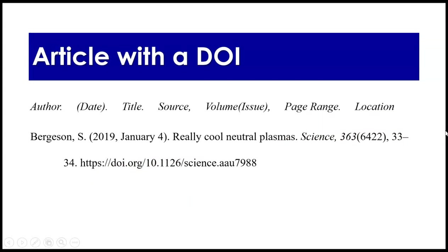For an article with a DOI, you have author, date, title, source, volume and issue, page range, and location. For volume and issue in journals, think of it like a TV show — if you're watching Fleabag, season one and two would be your volumes, and episodes inside those seasons would be your issues. So in this case, we have an article written by S. Bergeson, published 2019, January 4th. The title is 'Really Cool Neutral Plasmas' — capital R, nothing capitalized after that. The source journal is Science, italicized.